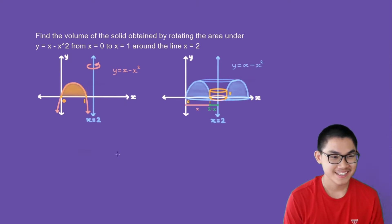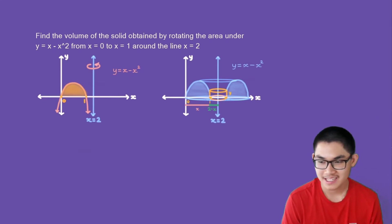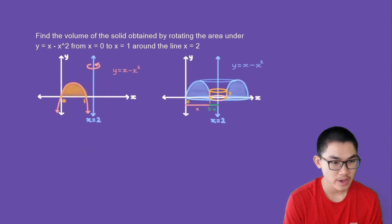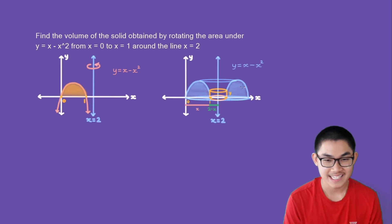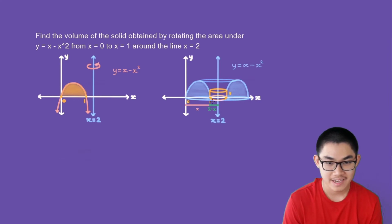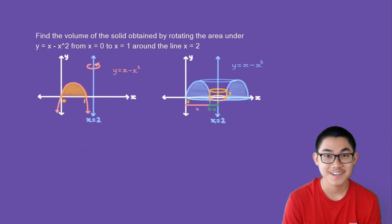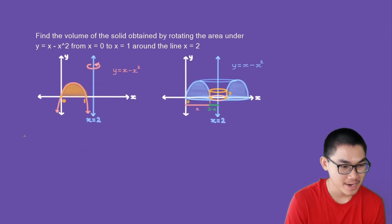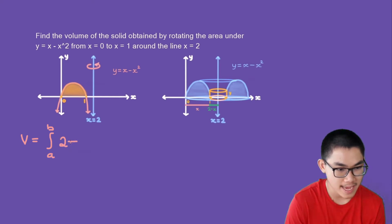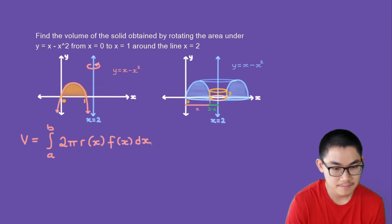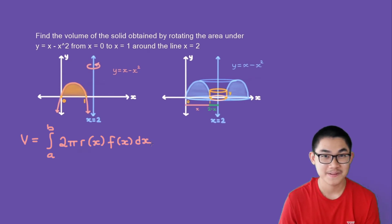Let's do one more problem. We have a function y is equal to x minus x to the power of 2 — it's a parabola. We're going to rotate the area between 0 and 1 around x is equal to 2. Once we do that, we get this three-dimensional object. If we place the cylinder here, notice the base is on the x-axis, so we integrate with respect to x. The formula will be V equals the integral from a to b of 2π times the radius times the height dx.